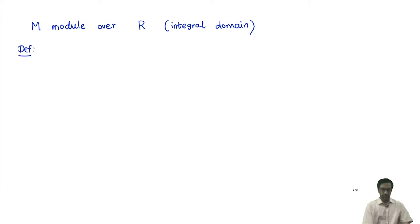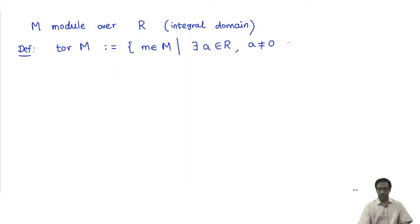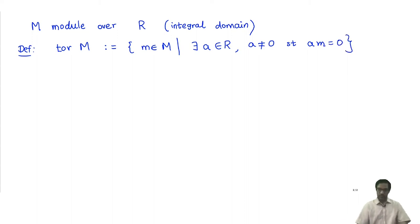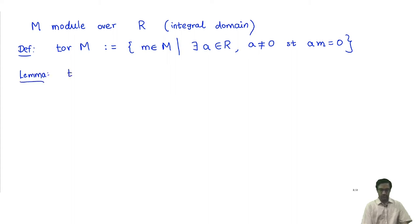Here is a definition. We define tor(M) as a subset of M — specifically, the set of all elements m in M such that there exists an element a in R, a not zero, such that a acting on m gives 0. So tor(M) is the set of all such elements. Observe that 0 is certainly in tor(M). In fact, tor(M) is actually a submodule of M.